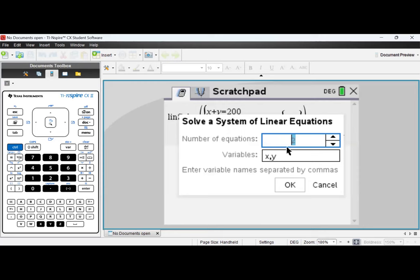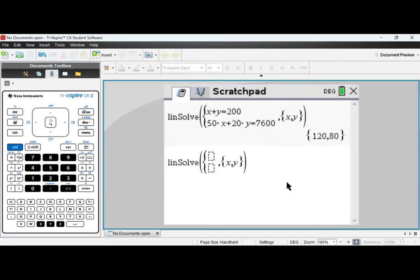If you go over here, number of equations, there are two equations. So write two over here. Now, x and y variable. Our quotient was in x and y now. So we'll keep x and y. If it is three variables, write x, y, z. Right now, we'll keep two. The first box will represent the first equation. Second box will represent the second equation. So first equation was x plus y equals to 200. And the second equation was 50x plus 20y equals to 7600. Understood?